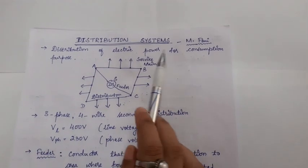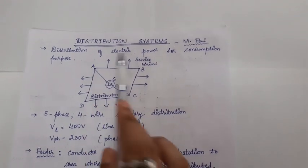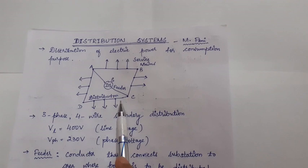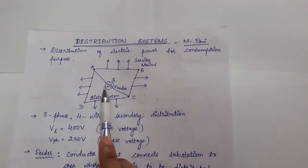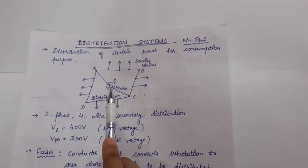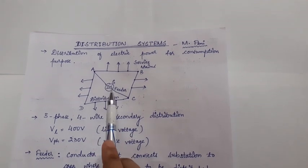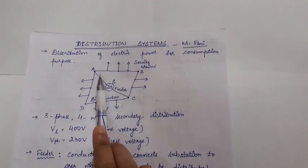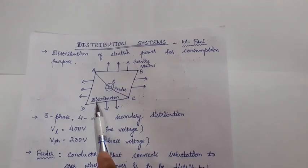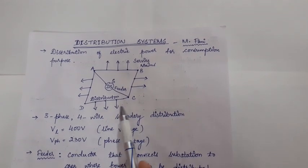The distribution of electric power for consumption purposes is known as the distribution system. Here you can see the layout of the components of a distribution system. DS represents the distribution substation, from where the conductors arising out of it are called feeders. Feeders are connected through the distributors, and from the distributors, the tappings taken are called service mains.